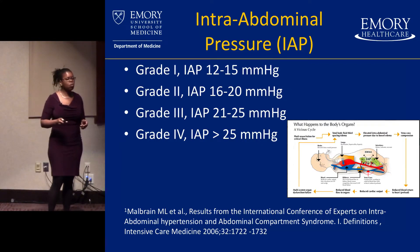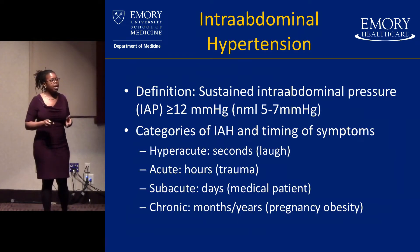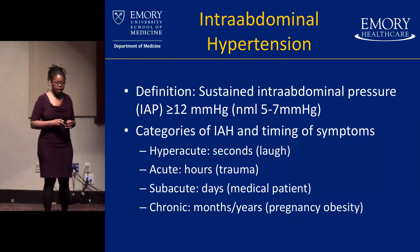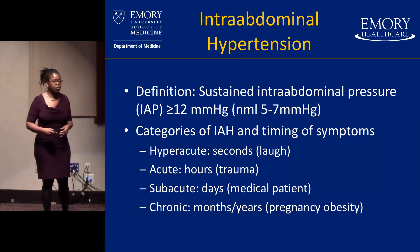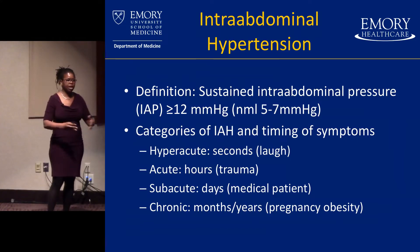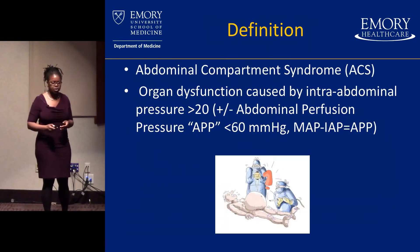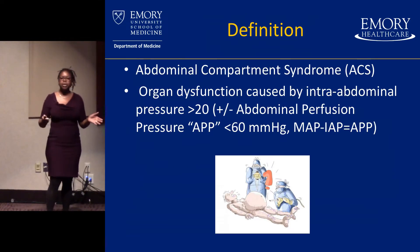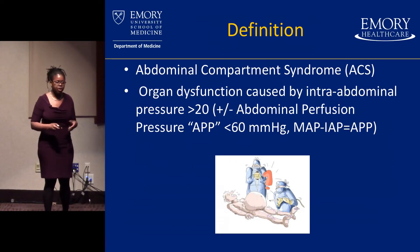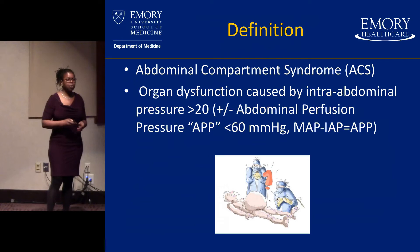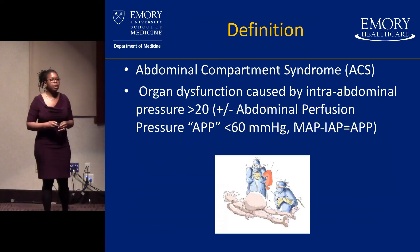It's a grade 1 to 4 system — grade 1 being 12 to 15 mmHg, and greater than 25 is a grade 4. When intra-abdominal pressure is greater than 12, we grade them also by onset: hyper-acute (like coughing), chronic (like pregnancy), or the acute and sub-acute population we deal with in the ICU. When that pressure is elevated to the point it causes organ dysfunction — greater than 20 mmHg, plus abdominal perfusion pressure less than 60 — that is abdominal compartment syndrome.